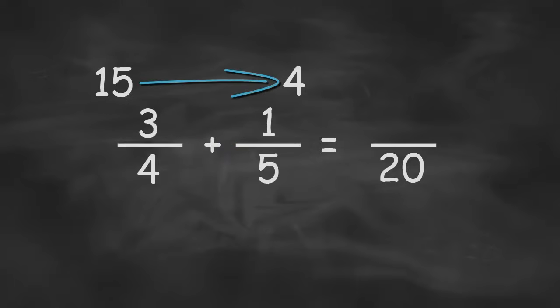Now we add these two things together, and we get 19 twentieths. And that answer is correct, and it's in its simplest form.